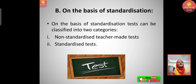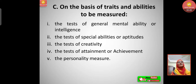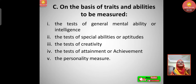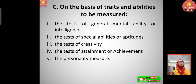On the basis of standardization, tests can be classified into two categories: non-standardized teacher-made tests and standardized tests. Then the third classification — on the basis of traits and abilities to be measured — includes tests of general mental ability or intelligence, tests of special abilities or aptitudes, tests of creativity, tests of attainment or achievement, and personality measures.